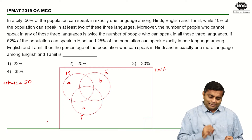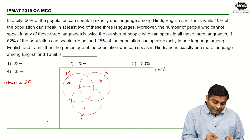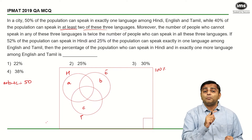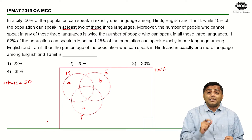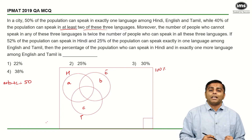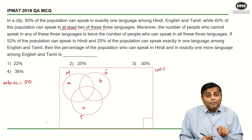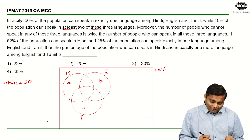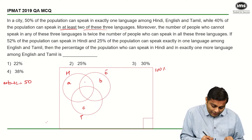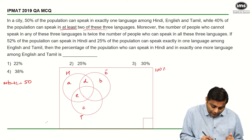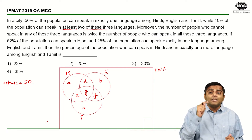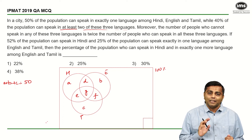The next statement is very important: 40% of the population can speak in at least two of these three languages. They have not said exactly two — they said at least two, which means 40% includes people who can speak two languages as well as three languages. So the regions D, E, F and G — D plus E plus F plus G is 40%.